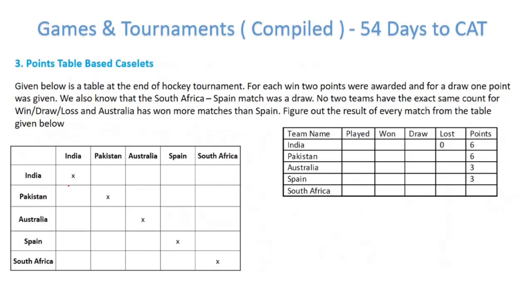Let's look at point-based or point-table caselets. Given a hockey tournament with 5 teams — India, Pakistan, Australia, Spain, and South Africa — where 2 points are awarded for a win, 1 point for a draw, and 0 for a loss. We also know that the South Africa–Spain match was a draw, no two teams have the exact same win-draw-loss count, and Australia has won more matches than Spain. We need to figure out the result of every match from the summary and match result tables.